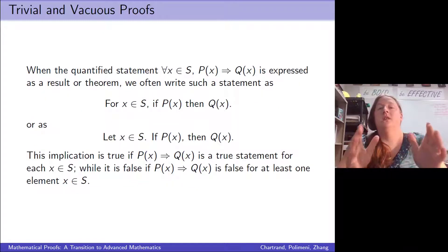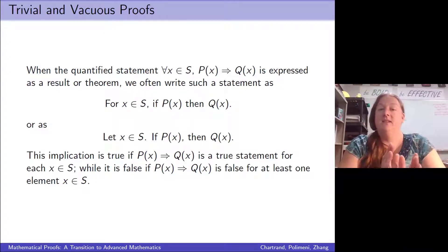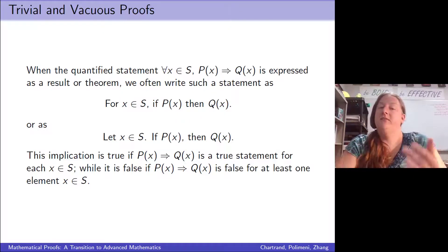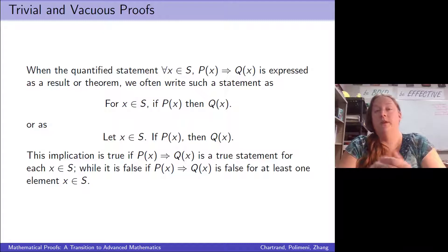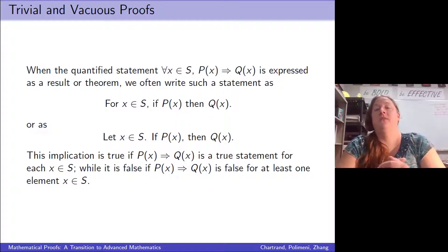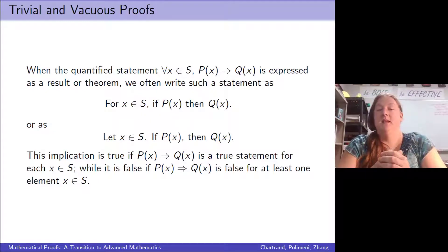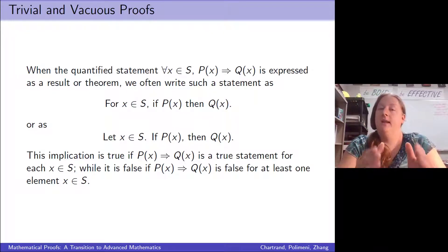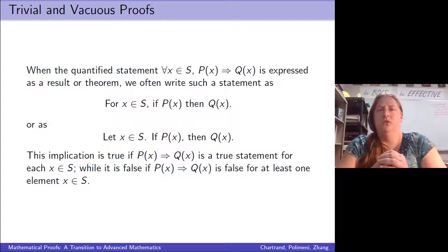Looking at the logic statement: for all x in domain S, p(x) implies q(x). This is an if-then statement with a universal quantifier. Ways we'll see this stated going forward: 'for x in S, if p(x) then q(x),' or 'let x be in S, if p(x) then q(x).' Notice the universal quantifier is there in that opening phrase, even if it doesn't directly look like one — we need to recognize that.